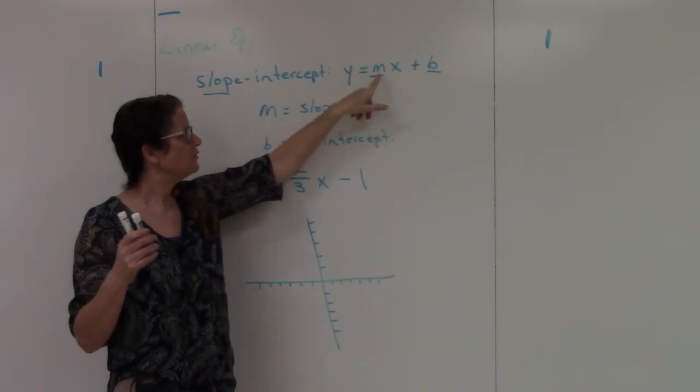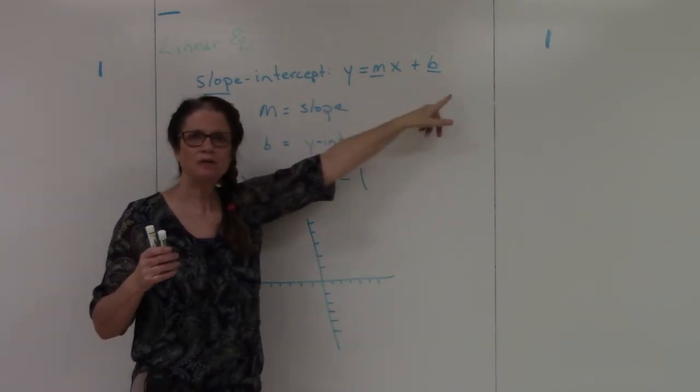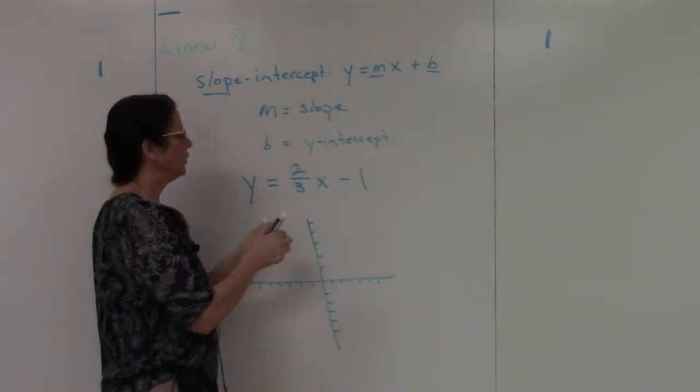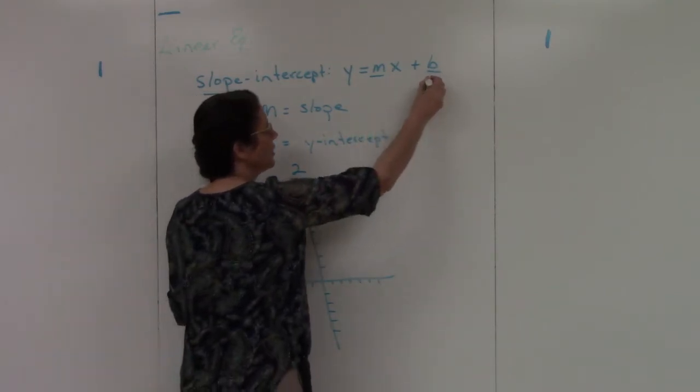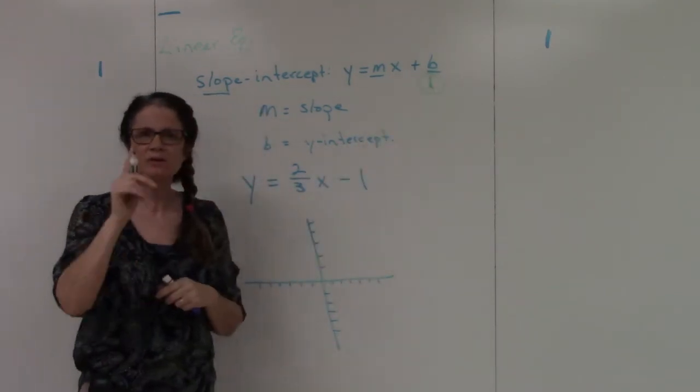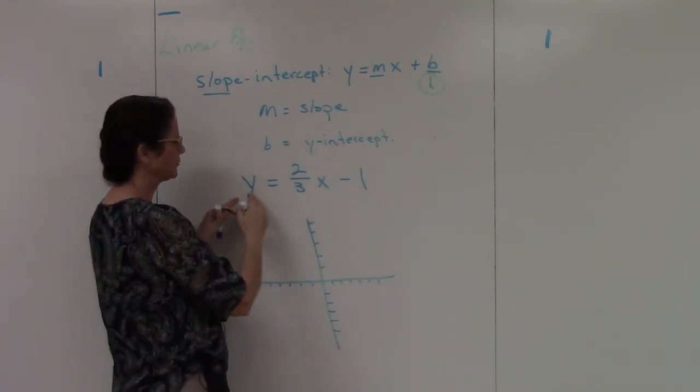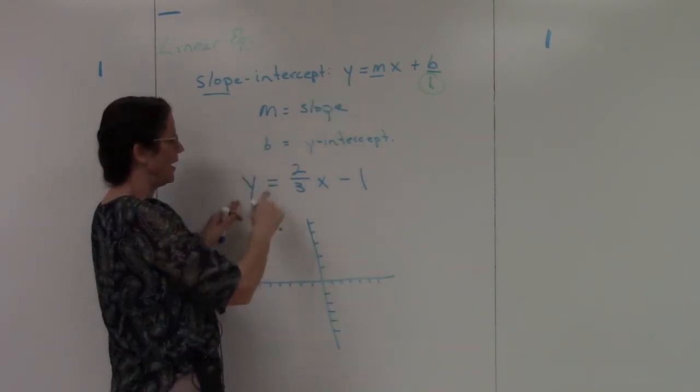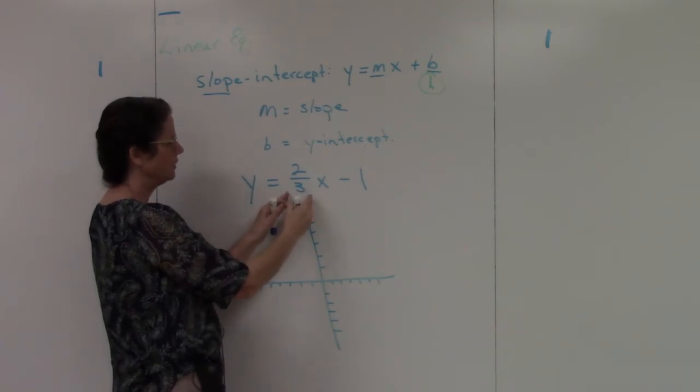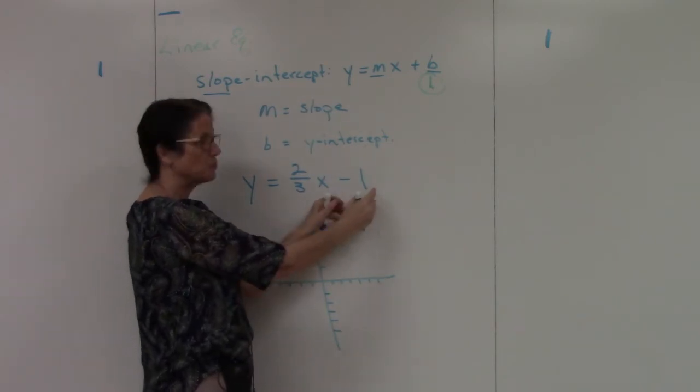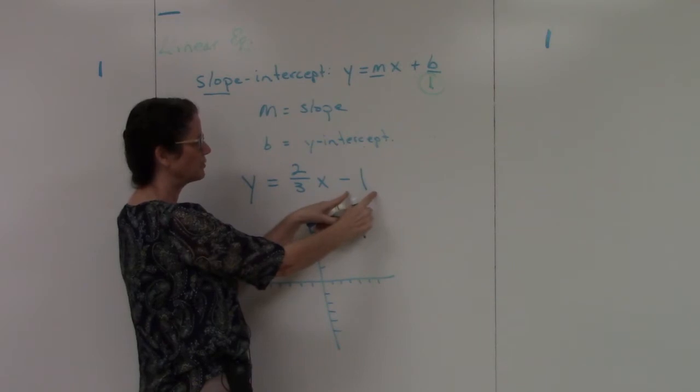As I said in the last video, m is your slope, b is your y-intercept. So when you're graphing, you're always going to start at b. You're always going to start at the y-intercept. So I wrote out this equation, y equals, so we know it's in the slope-intercept format. This is my slope. This is my y-intercept. So I'm going to start at the y-intercept.